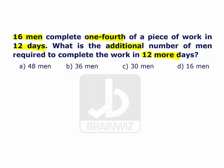This is a basic concept of Chain Rule where we say M1 D1 H1 by W1 must be equal to M2 D2 H2 by W2.